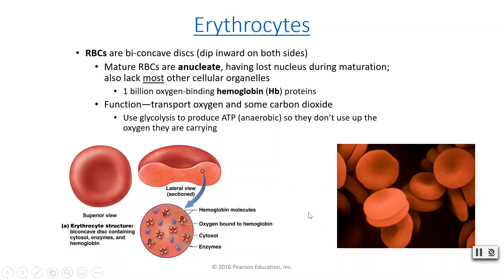Mature red blood cells are anucleate — as they grow up, they lose their nucleus. They also lack most other cell organelles, which means if they become damaged, they do not have a way to fix themselves. You have one billion oxygen-binding hemoglobin proteins in your red blood cells — a billion, with a B. We can carry a lot of oxygen, and that's literally the job of red blood cells: to transport oxygen and a little bit of carbon dioxide.